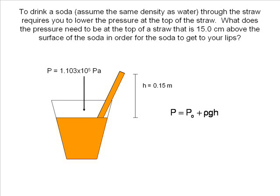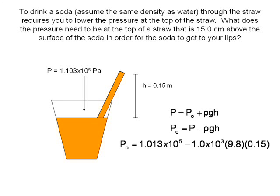Now rearrange the equation to find P₀, the pressure at the top of the straw. Substitute in the known values and find the pressure at the top of the straw. This is the pressure that your mouth produces when sucking up the soda.